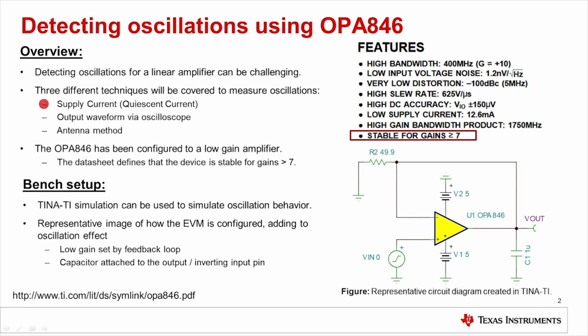Using this device, we will be showing three different techniques to measure the oscillations. The first will be to measure the supply current or quiescent current. The second method will be to monitor the output waveform, and the third method will be to use an antenna to measure these oscillations.